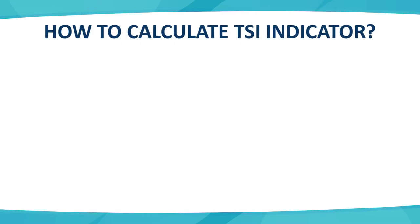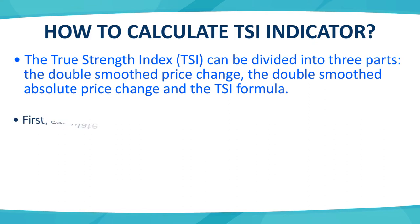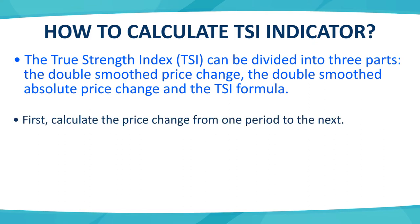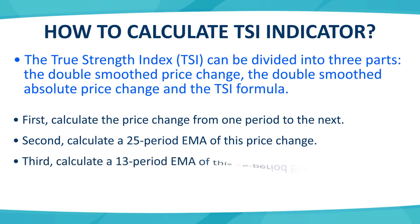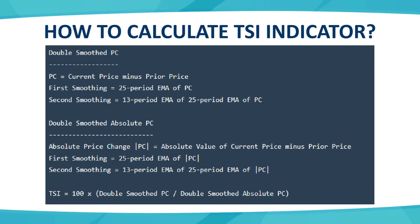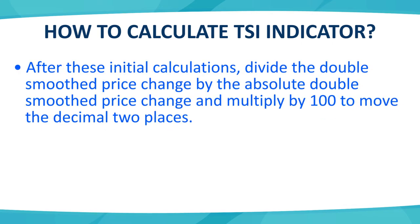Let us quickly go through the formula of TSI. TSI's calculation has 3 parts. First, the price change is calculated — the difference between the current price and the previous price. Then the price difference is smoothed out by calculating the 25-period EMA, and then that result is doubly smoothed with another EMA. Next, we calculate the absolute price change, which is the positive value of price changes, and apply the same 25-period double EMA smoothing. Finally, we divide the double-smoothed price change by the double-smoothed absolute price change. The resulting outcome is our TSI.